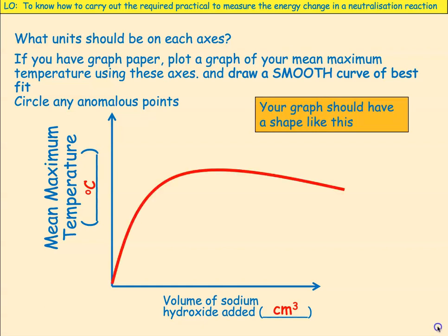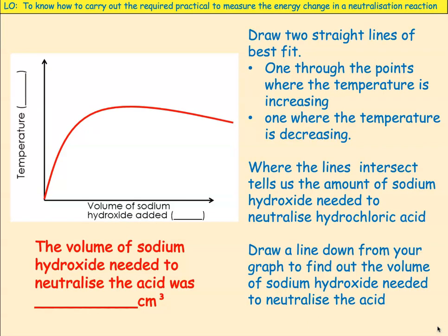Your graph should have a shape like this. You are then asked to draw two straight lines of best fit — one through the points where the temperature is increasing and one where the temperature is decreasing. There's your line of best fit for the increasing section and there's your line of best fit for the decreasing section.